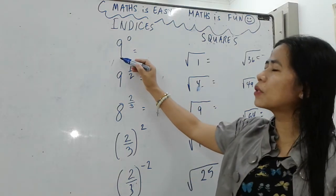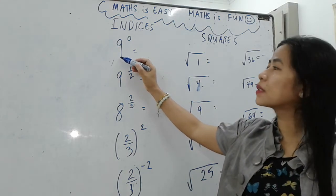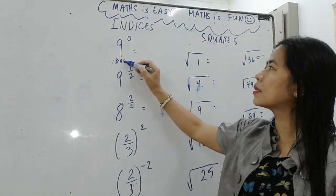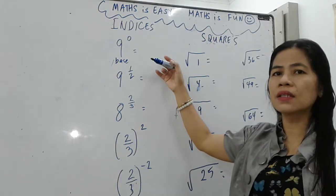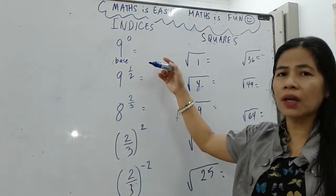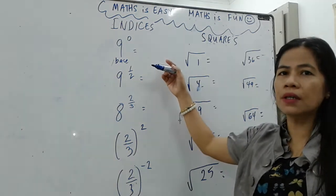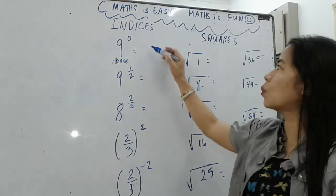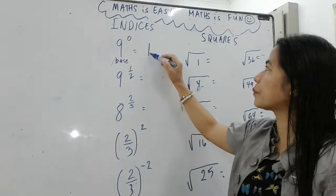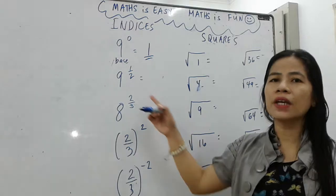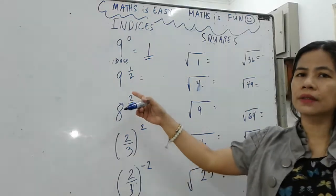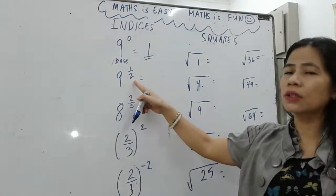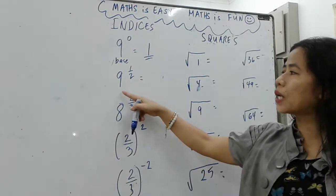This number nine is called our base, and the exponent is zero. Any number which has a power of zero is equal to one. If a number has an exponent of one-half — for example, nine to the power of one-half —